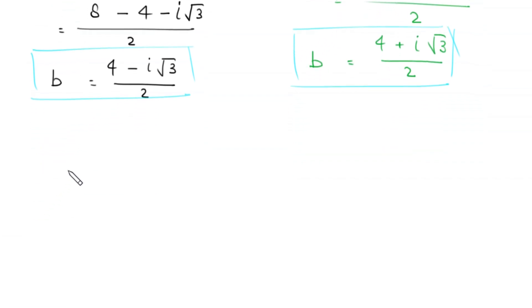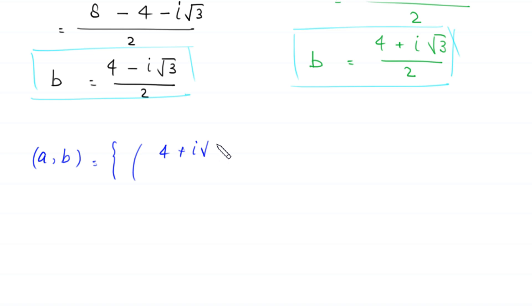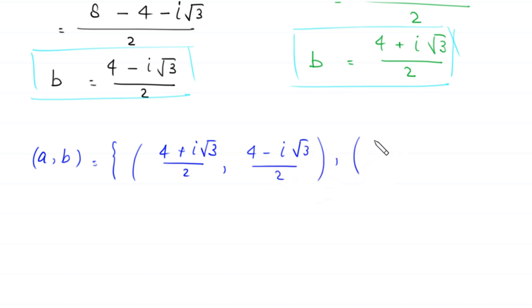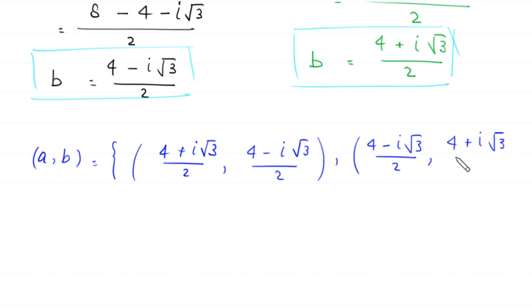So the final set of solutions (a, b) is: the first pair is ((4 plus i root 3) over 2, (4 minus i root 3) over 2), and the second pair is ((4 minus i root 3) over 2, (4 plus i root 3) over 2). This is the final answer of this problem.